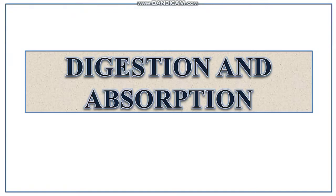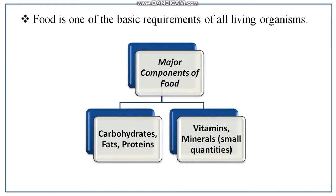Today we are going to start digestion and absorption. Food is one of the basic requirements of all living organisms, which provides us energy and also organic molecules for growth and repair of body tissues. The organic components are carbohydrates, fat, and protein, and along with these, vitamins and minerals are also required but in small quantities.